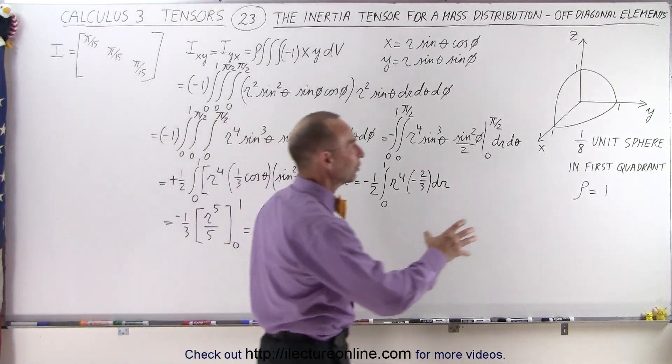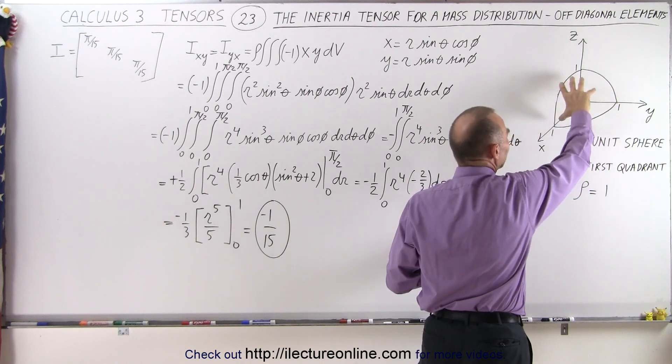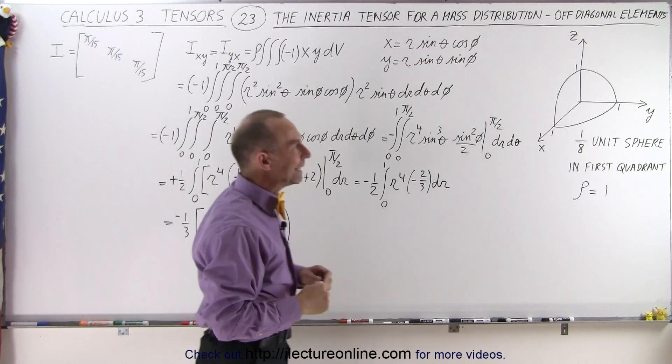Again, what we're trying to do here is find the inertia tensor of 1/8 of a unit sphere that's located in the positive quadrant with a density equal to 1, just to make things easy.